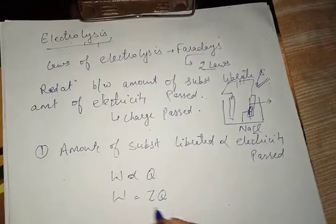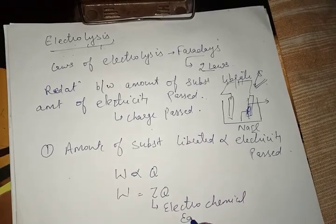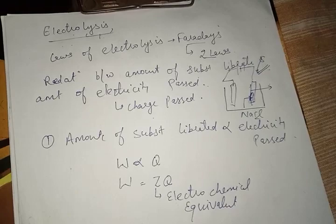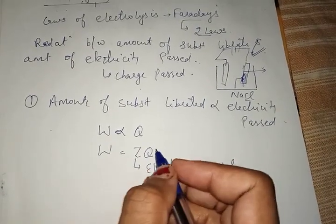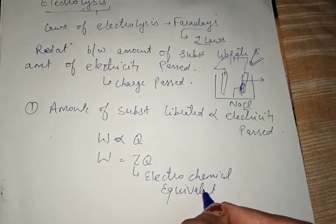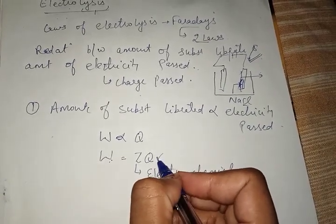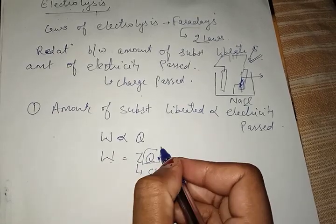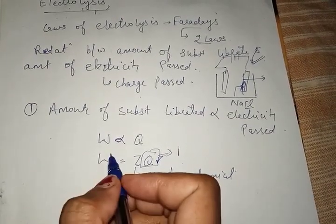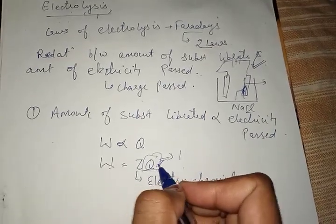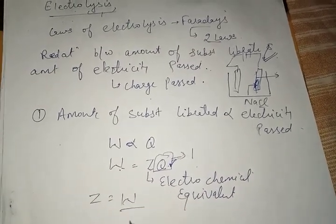Here Z is the electrochemical equivalent. The electrochemical equivalent is defined as the amount of any substance deposited or liberated when a charge of one coulomb is passed. So Z equals W when Q equals 1 coulomb — meaning Z is the amount of substance liberated when one coulomb of electricity is passed through the solution.